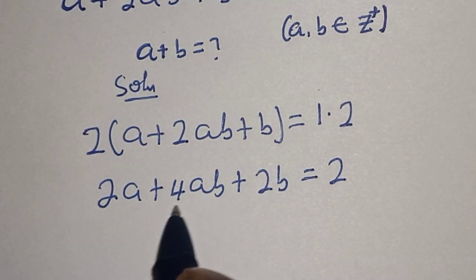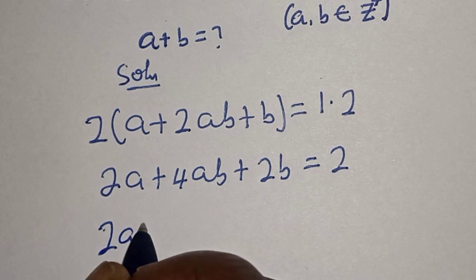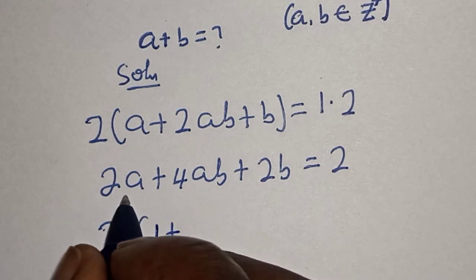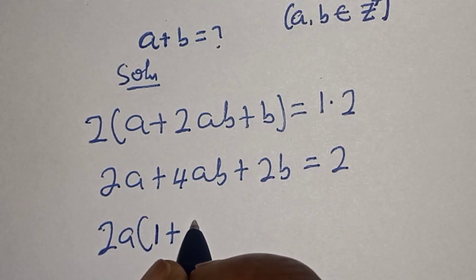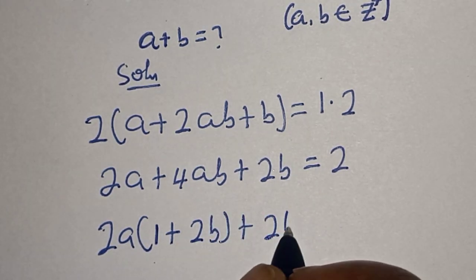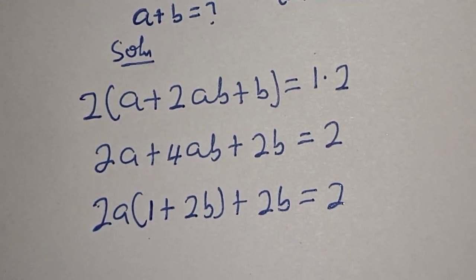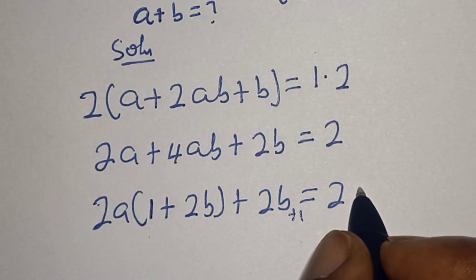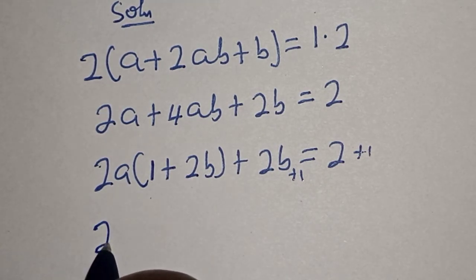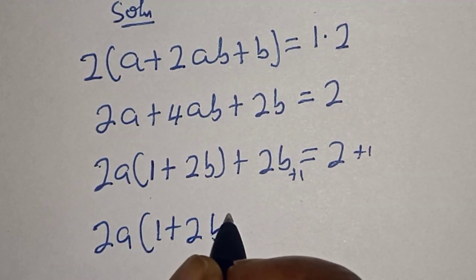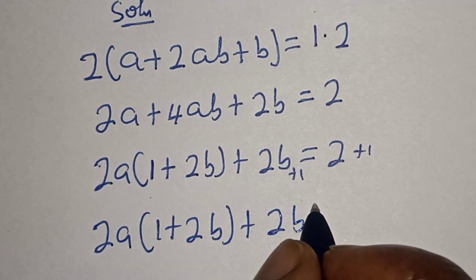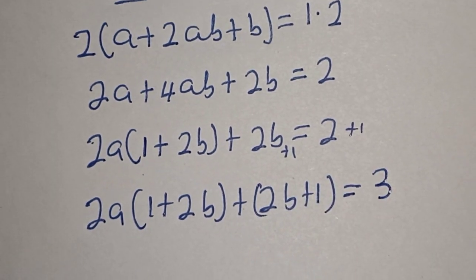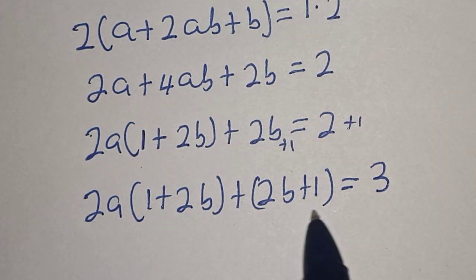Now 2a is common here. Let's bring it out. We have 2a times (1 plus 2b), and we also have the remaining 2b term, giving us 2a(1 plus 2b) plus 2b is equal to 2.